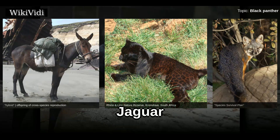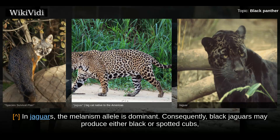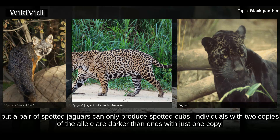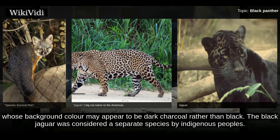Jaguar. In jaguars, the melanism allele is dominant. Consequently, black jaguars may produce either black or spotted cubs, but a pair of spotted jaguars can only produce spotted cubs. Individuals with two copies of the allele are darker than ones with just one copy, whose background color may appear to be dark charcoal rather than black.